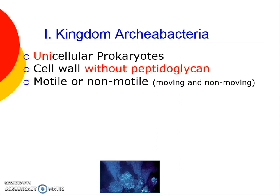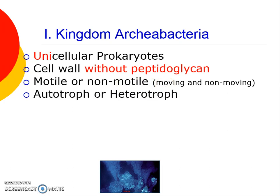They can sometimes be things that move and sometimes things that don't move. We have a fancy way of saying moving and non-moving called motile and non-motile. We also can review the terms autotroph and heterotroph, meaning makes its own food or has to eat other things. The organisms in this category, these archaebacteria, they could be either.